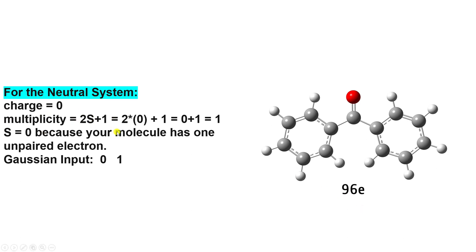We calculate the spin multiplicity using 2S + 1. Since there is no unpaired electron, S = 0, so 2 × 0 + 1 = 1. In the Gaussian input file we have to mention charge 0 and spin multiplicity 1, because there is no unpaired electron in benzophenone.